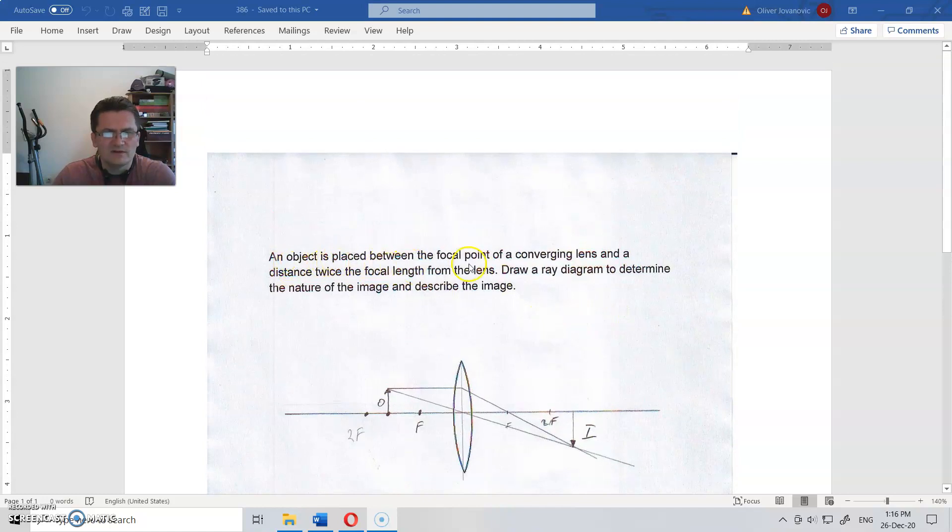An object is placed between the focal point of a converging lens and the distance twice of the focal length from the lens. So this is the object, this is the focal point.